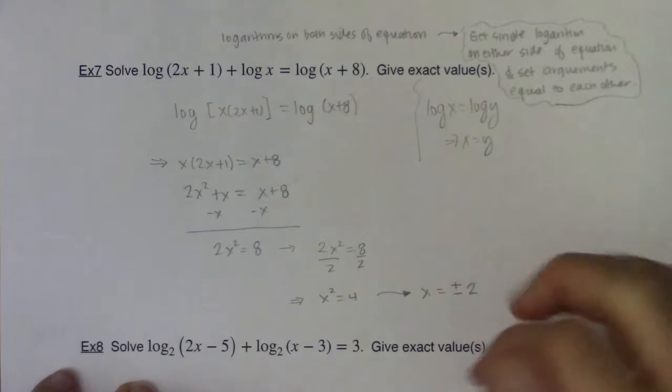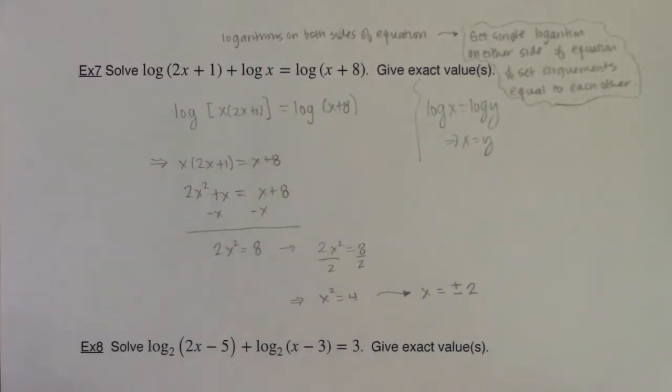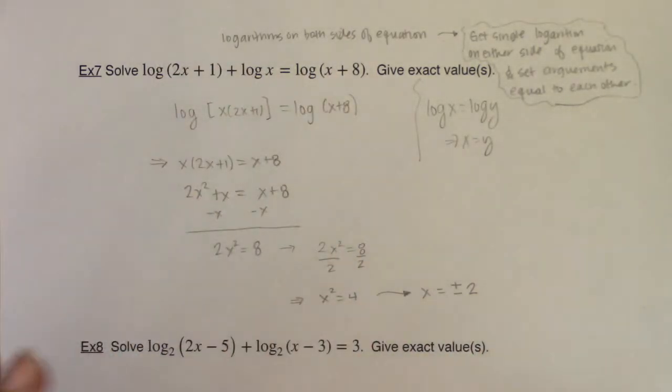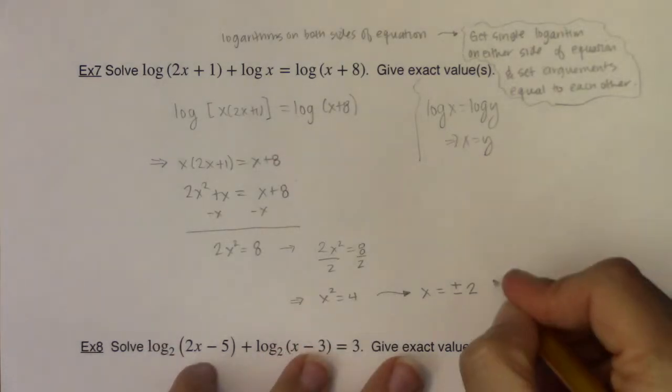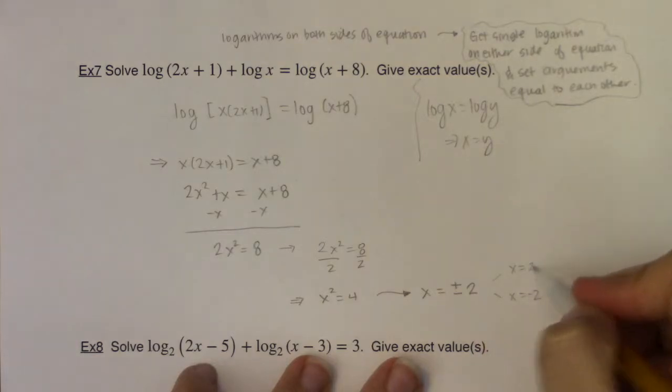And whenever you get answers to logarithmic equations, since they do have domain issues, you have to test out both of your x values, and make sure they keep your arguments positive. All right, so I have two potential answers, right? I have either x is equal to 2 or x is equal to negative 2. So let's try plugging these in.